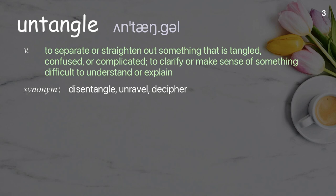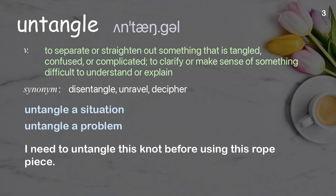Untangle: To separate or straighten out something that is tangled, confused, or complicated; to clarify or make sense of something difficult to understand or explain. Examples: Untangle a situation. Untangle a problem. I need to untangle this knot before using this rope piece.